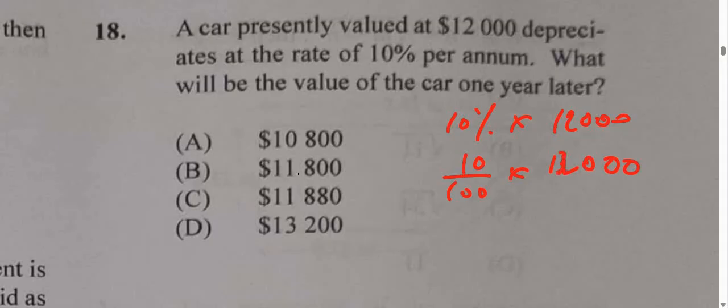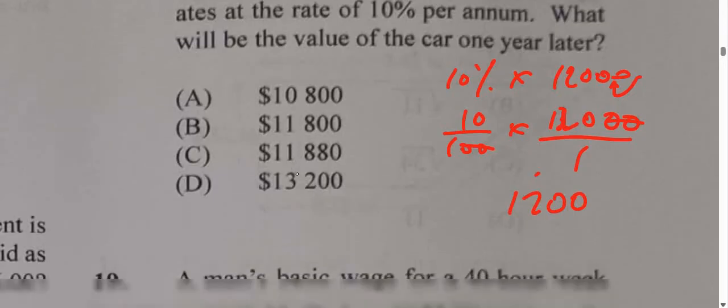We cancel by dividing by 100 in the numerator and denominator, and that's 10 times 120, which equals 1,200. Another way to do this is to move the decimal one place inward and we get 1,200. So that's the amount the car has been devalued by.